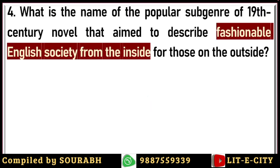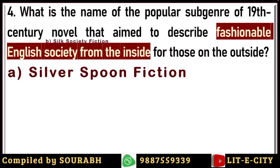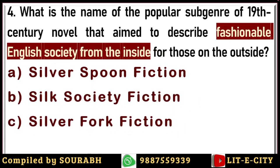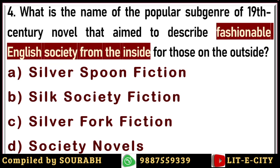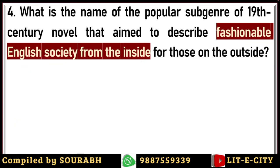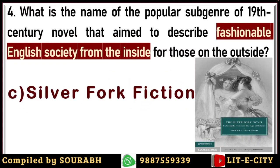Next question: what is the name of the popular sub-genre of 19th century novel that aimed to describe fashionable English society from the inside for those on the outside? These were novels about the elite and aristocratic class, their manners and lifestyle. Options are Silver Spoon Fiction, Silk Society Fiction, Silver Fiction, or Society Novels. The correct answer is that it was known as the Silver Fork Novel, with Edward Bulwer-Lytton as one of its key proponents.